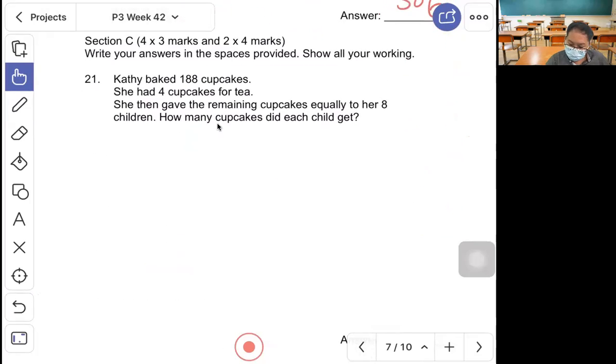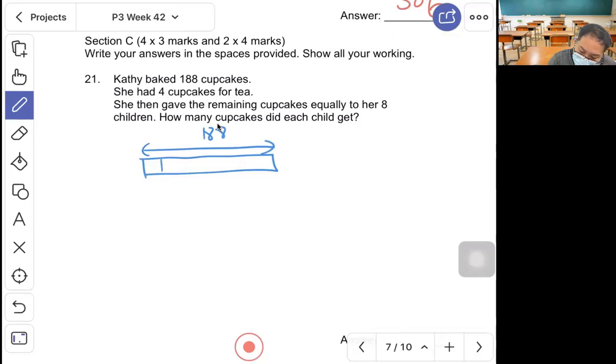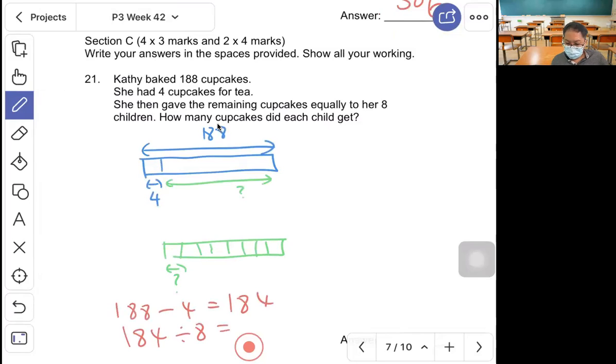Question 21, Kathy baked 188 cupcakes. She had 4 cupcakes for tea, then gave the remaining cupcakes equally to 8 children. How many cupcakes did each child get? Draw a model: total 188, take away 4, and the remainder is put into 8 equal parts. Take 188 minus 4 to get 184, then divide by 8. Each child will have 23.